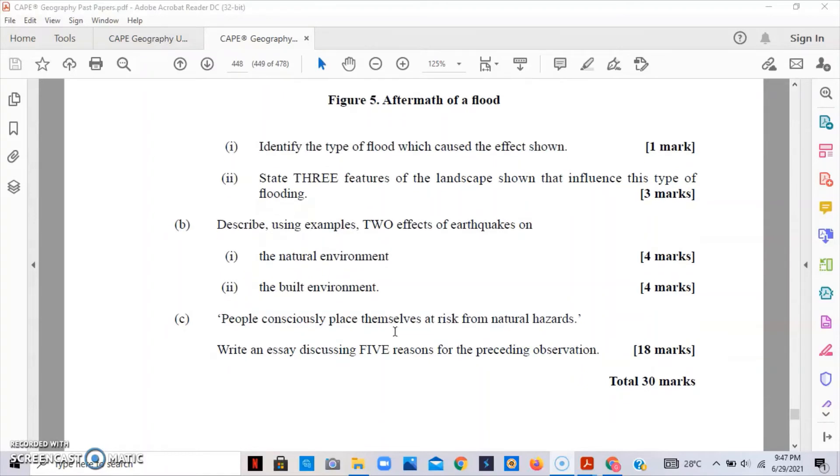Part c says that people consciously place themselves at risk from natural hazards. We're to discuss five reasons for the preceding observation. In other words, why do persons place themselves in areas that are prone to natural disasters or natural hazards? One reason is due to lack of alternatives due to poverty. Because of their poverty level or the amount of finance that they have, they don't have a choice. For example, someone might live on the bank of a river knowing it will flood because they're very poor and have nowhere else to go.